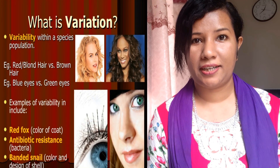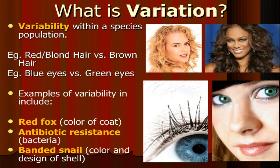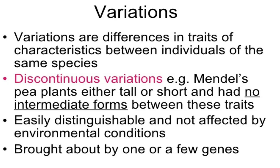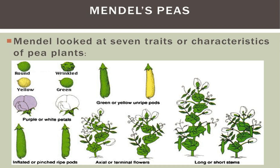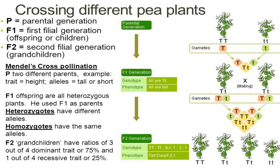So what is variation? Variations are differences in traits or characteristics between individuals of the same species. So far we have dealt with traits that show a certain type of variation in the phenotypes. For example, Mendel's pea plants were either tall or short, and the seeds green or yellow.